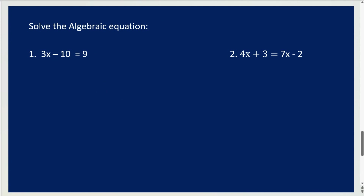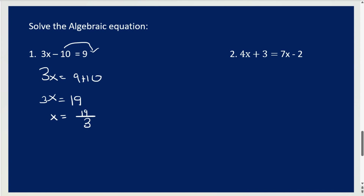For the first equation, we are solving for x. The first step is to isolate the variable. So we're going to write 3x equals 9 plus 10, because the negative 10 becomes positive 10. Now, 3x equals 19. Then, to isolate x, it's going to become x equals 19 over 3. So that is the answer — x equals 19 over 3.